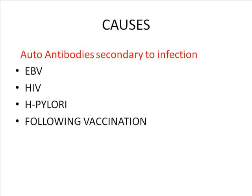What is the cause for ITP? The cause for ITP is idiopathic — meaning the reason is not known. But some studies say that idiopathic thrombocytopenic purpura is secondary to autoantibodies, which are developed against viruses like Epstein-Barr virus, HIV, H. pylori, and following vaccination. The antibodies are directed against these viruses, but as a cross-reaction they also act against the body's own platelets.